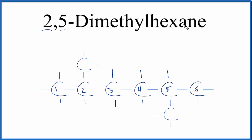Hexane, six carbons. The A-N-E tells us they're single bonded. The methyl, we have two of them on the second and the fifth of our carbons here.